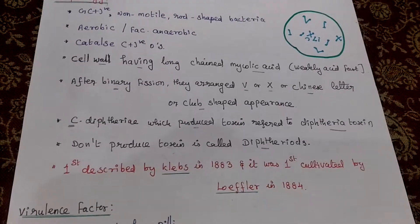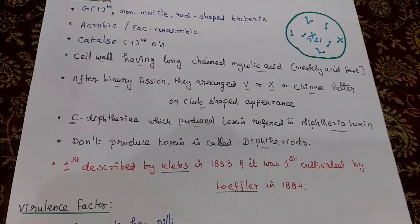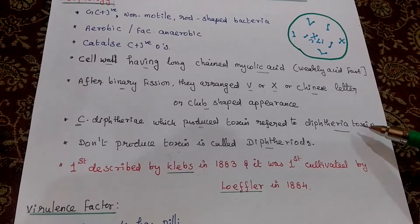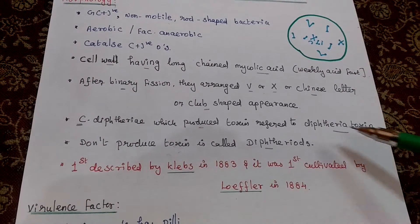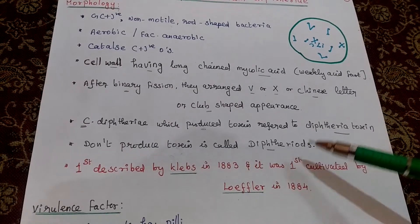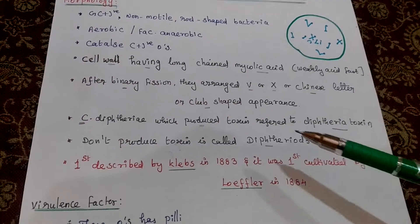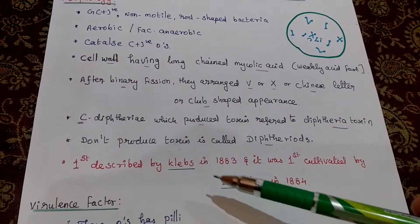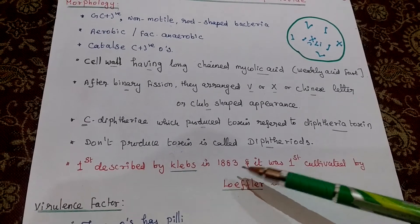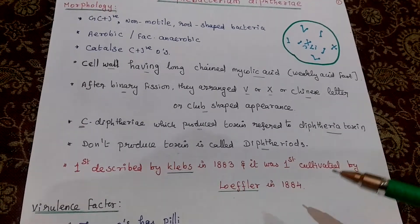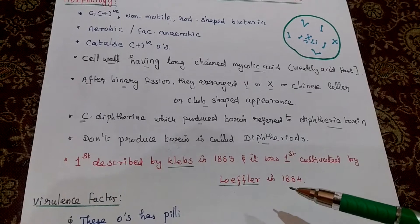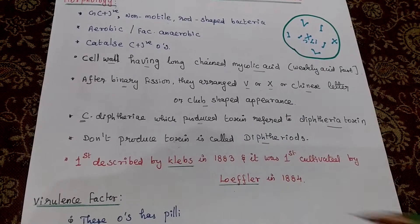This organism produces a toxin referred to as diphtheria toxin. If it does not produce the toxin, it is called non-toxigenic diphtheria. This organism was first described by Klebs in 1883, and first cultivated by Löffler in 1884.